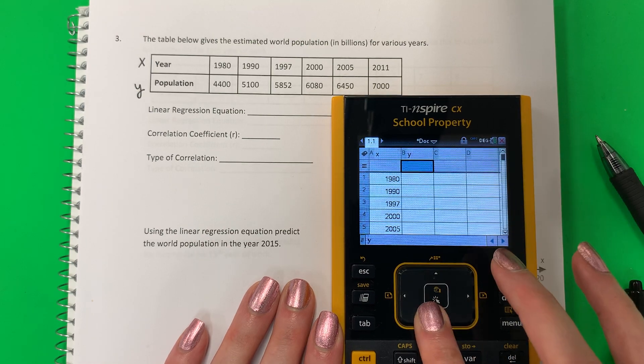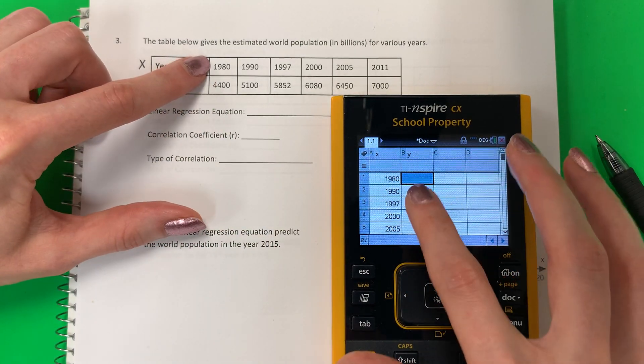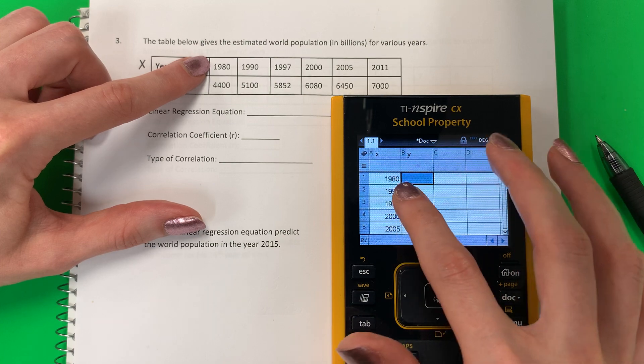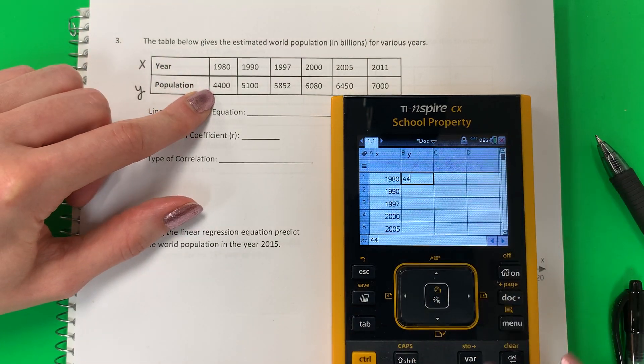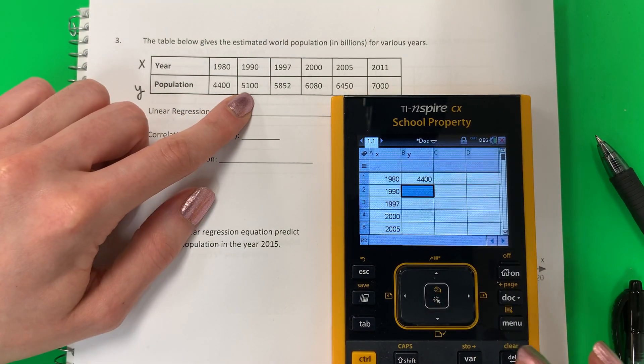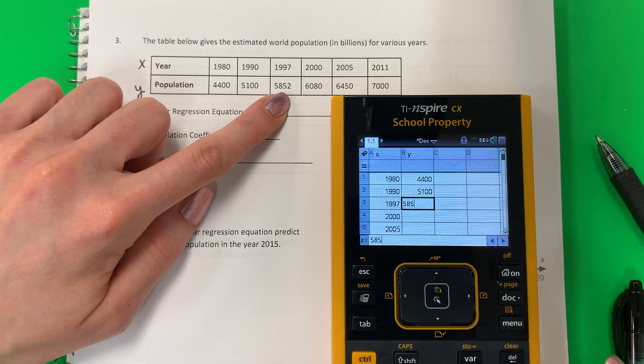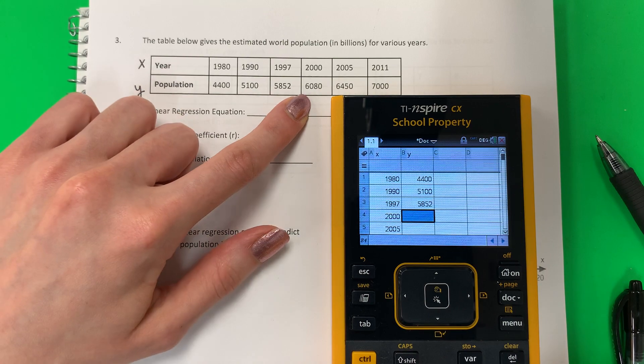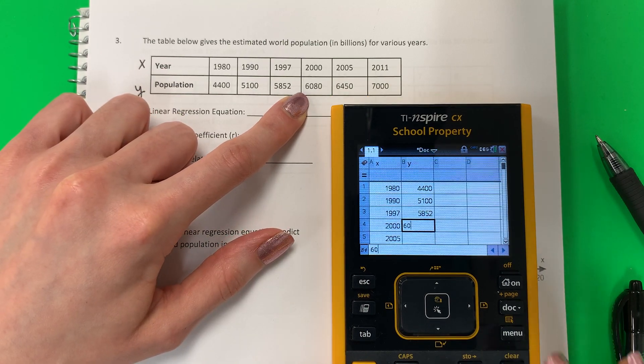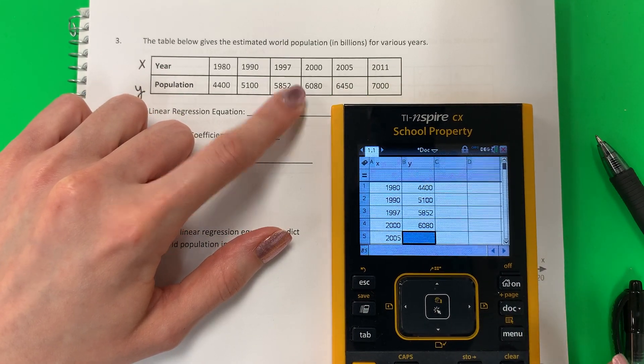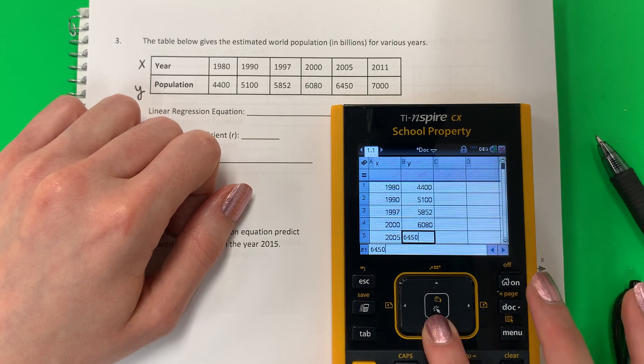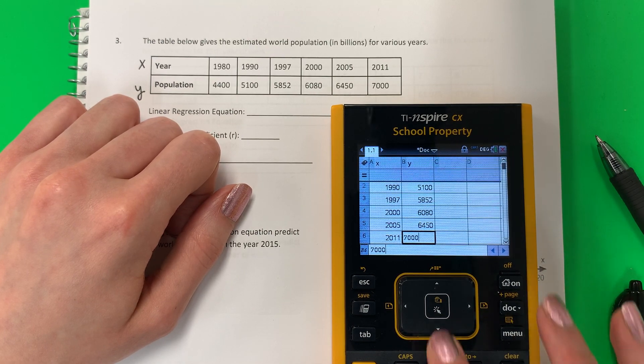And go back up. Make sure you're next to 1980, siguiente de 1980. And then put your numbers. 4,400, 5,100, 5,852, 6,080, 6,450, and 7,000.